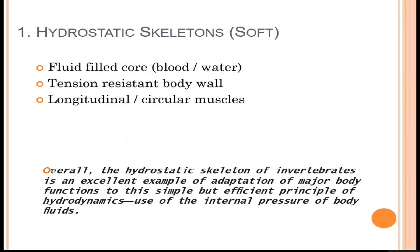Those three components include: a fluid-filled core — it could be blood, water, or some fats — then it must have a tension-resistant body wall, meaning the body wall should be stiff and strong enough that it does not expand under excessive pressure put on the fluids. And thirdly, a group of longitudinal and circular muscles must be present. Overall, the hydrostatic skeleton of invertebrates is an excellent example of adaptation to the simple but efficient principle of hydrodynamics — the use of internal pressures of body fluids.